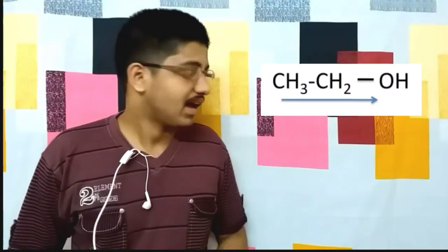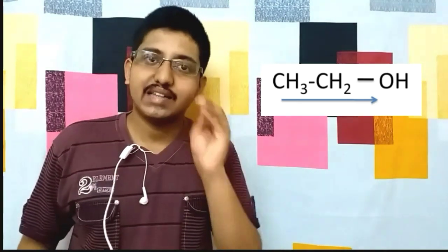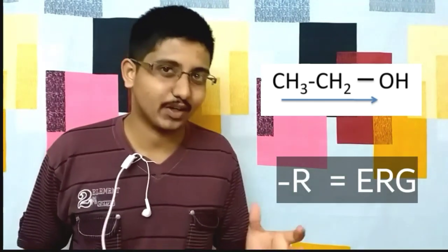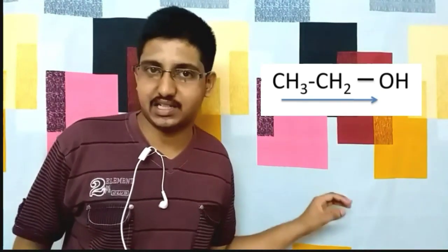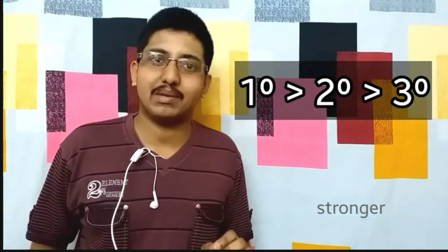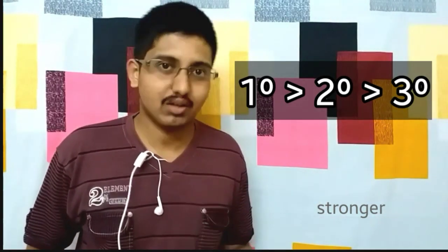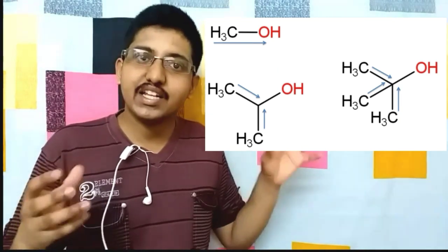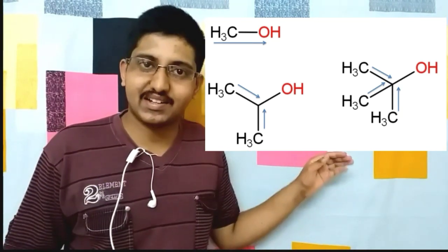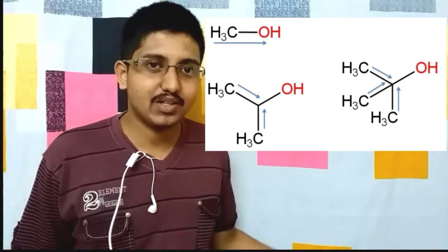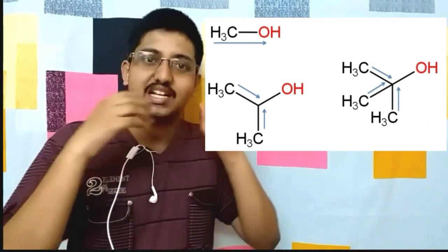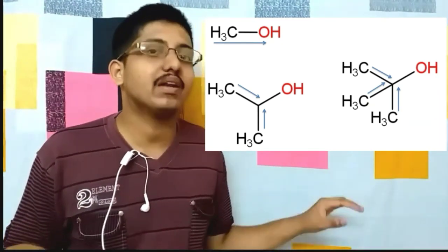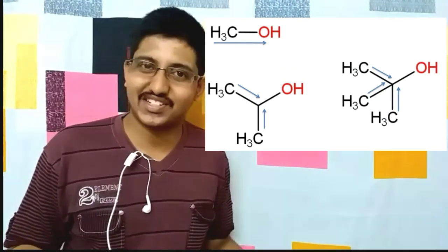In the case of alcohols, they are less acidic because alkyl groups are electron releasing groups — the +I effect of alkyl groups is the reason for their lesser acidic character compared to water and phenols. Also, primary alcohol is more acidic than secondary alcohol, which is more acidic than tertiary alcohol. This is because the inductive effect becomes stronger as more alkyl groups are directly attached to the carbon bearing the O-H group, so more +I effect means lesser acidic character.